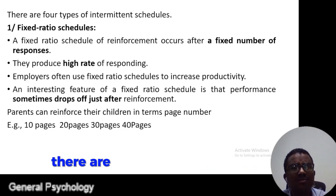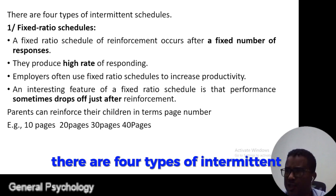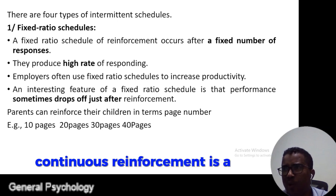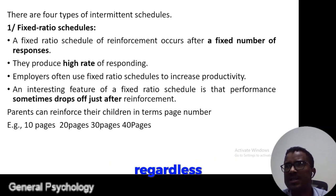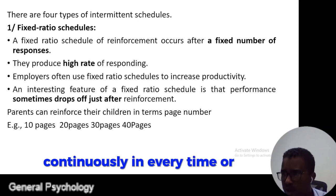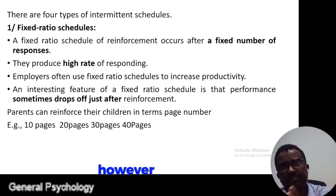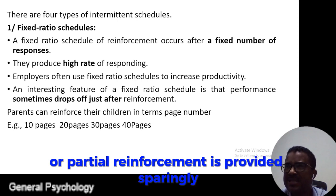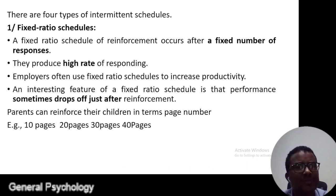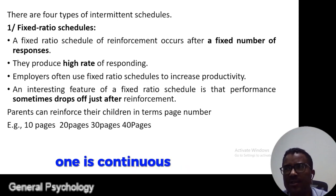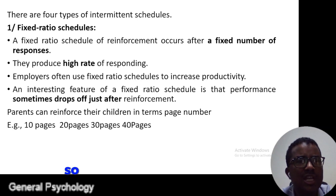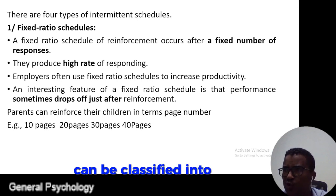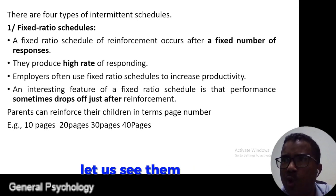There are four types of intermittent schedules. Continuous reinforcement is a process of providing rewards continuously for every response. However, intermittent or partial reinforcement is provided sparingly or sometimes. The two are different: one is continuous, the other is occasional. These intermittent reinforcement schedules can be classified into four types.